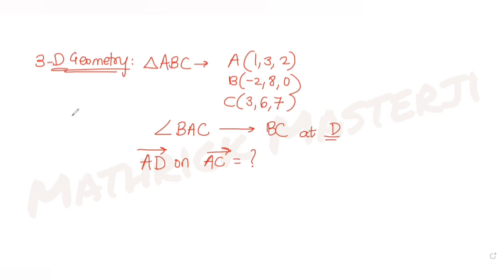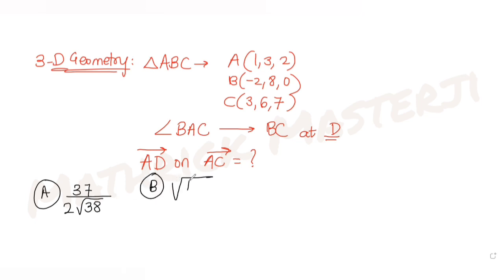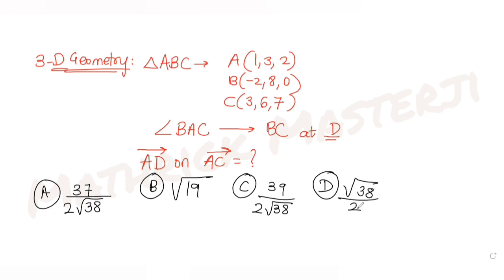The answer choices given are: (A) 37 over 2√38, (B) √19, (C) 39 over 2√38, and (D) √38. We need to figure out which one is the correct answer for the length of projection of vector AD on vector AC.